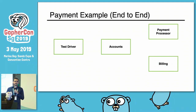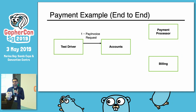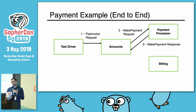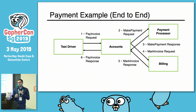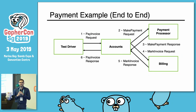For the end-to-end test example, we start by making a request to pay an invoice. The account service receives this request from the test driver. It makes a request to the payment processor to pay an invoice. If that's successful, we get a positive make payment response, and then it will make a request to the billing service to mark the invoice as paid. If that's successful, we relay that back as the pay invoice response to the test driver, and we have a positive test case.